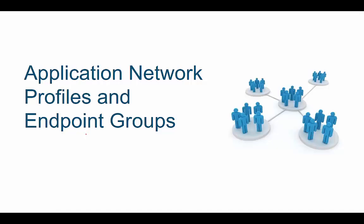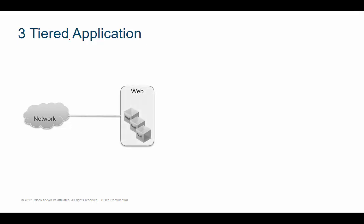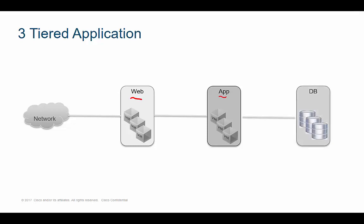Before we talk about endpoint groups and what application profiles are, let's talk about how your typical application gets deployed. Your typical application is going to get deployed in what's referred to as three tiers. You're going to have end users that leverage the network to access the first tier — the web servers. Then behind that set of web servers might be app servers, and your third tier would be the actual database servers.